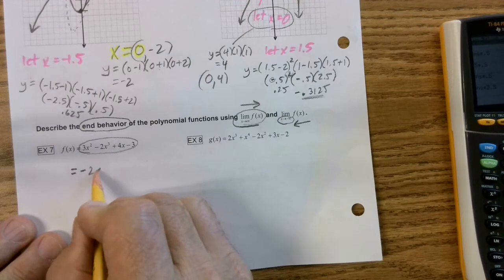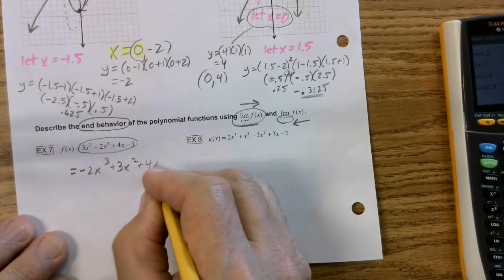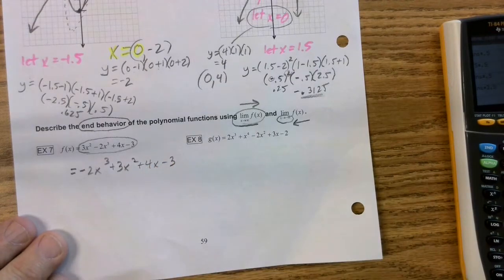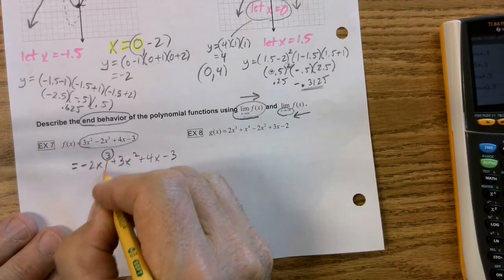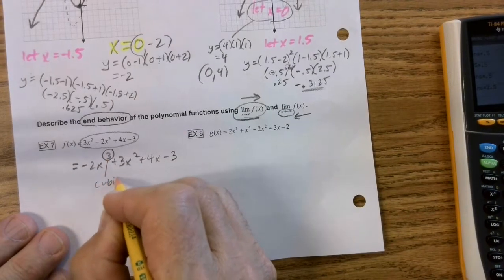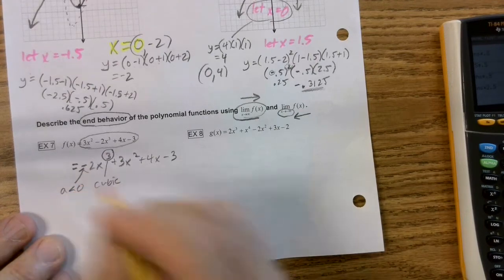So all they want you to do is rearrange this so you can see negative 2x cubed plus 3x squared plus 4x minus 3. And here's your general truth. Number one, it's a cubic. That's clue number one. It's a cubic. We know that. And here we know that A is negative, so it's less than 0.